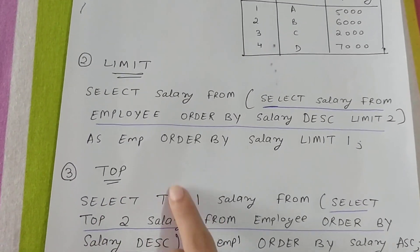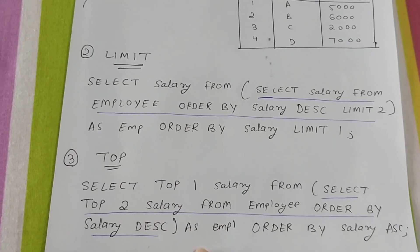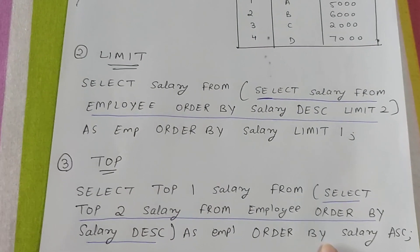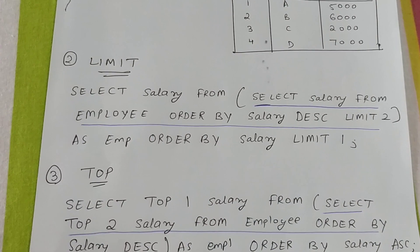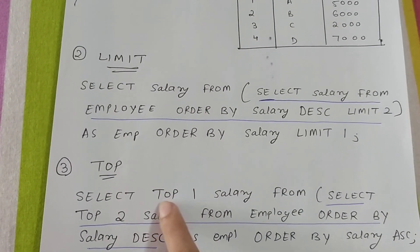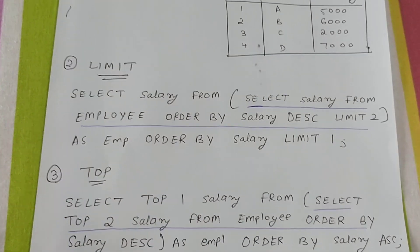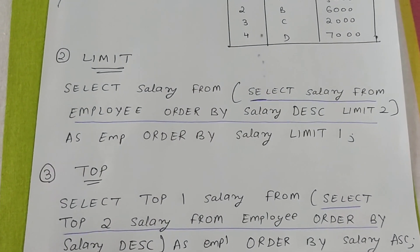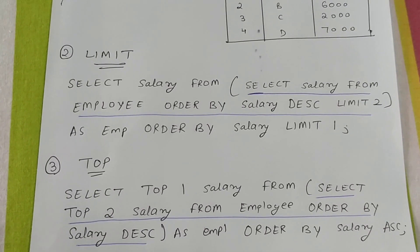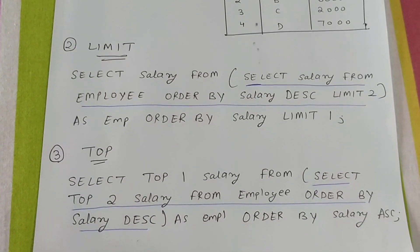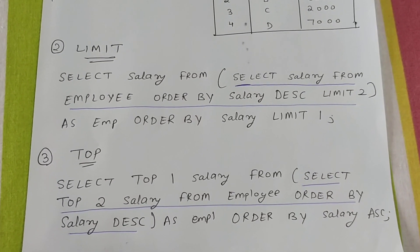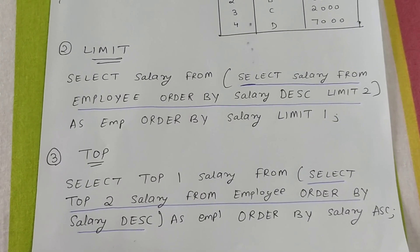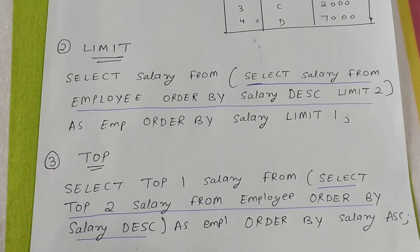The outer query says SELECT TOP 1 salary from the inner query ORDER BY salary ASC. Ascending order gives us 6000, 7000, and taking the TOP 1 returns 6000. So the final query is: SELECT TOP 1 salary FROM (SELECT TOP 2 salary FROM employee ORDER BY salary DESC) ORDER BY salary ASC. I hope it is clear, thank you.